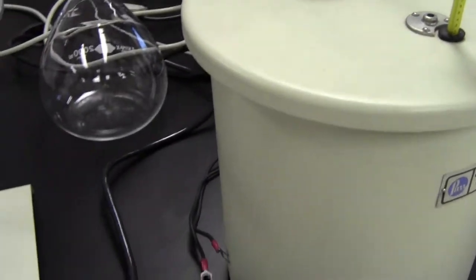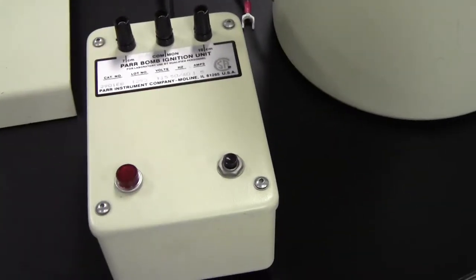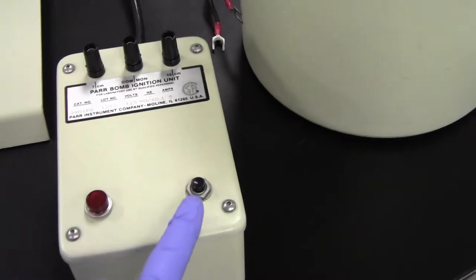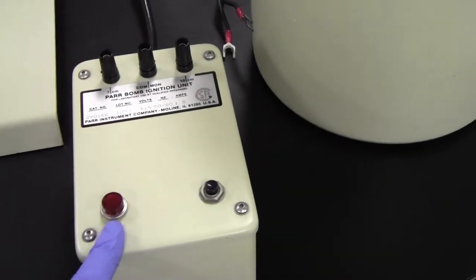You'll collect temperatures during this pre-period that will be stable, and when it's time to fire the bomb, you will do so by pressing this button on the fuse box. I won't do it now, but when you press it, this light will come on to show that it fired.